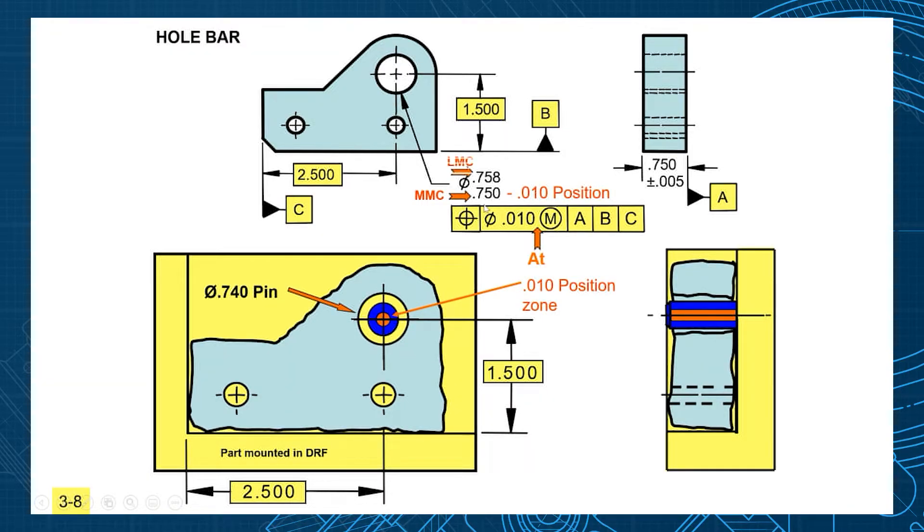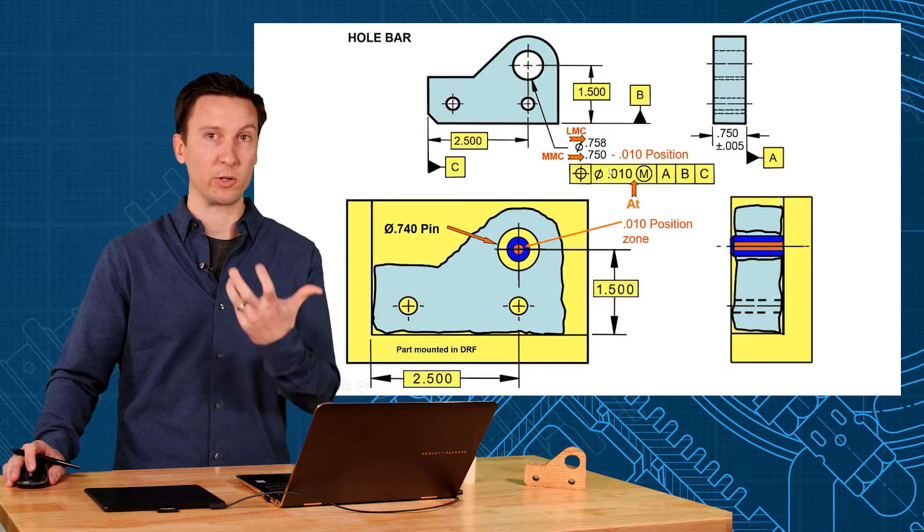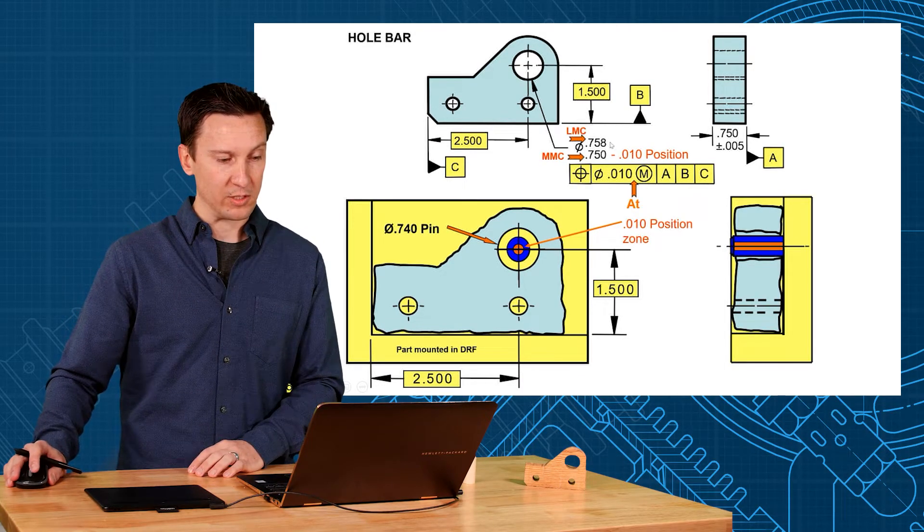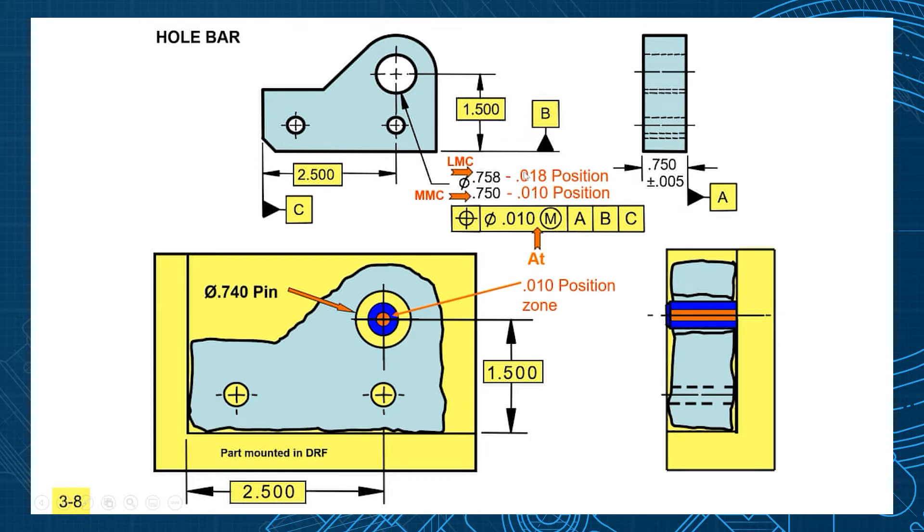But what happens if the hole comes in bigger? So the hole goes up to 758. Watch the hole. You got bigger - what happens? The position tolerance - you get a bonus, you get an extra. So the hole went from 750 to 758, so now you're allowed eighteen thousandths position. That larger hole, since it got bigger by eight, now you're allowed an extra position of eight, eighteen. Watch the tolerance zone - see that cylindrical zone now went up to a diameter of eighteen. Now the axis can shift all the way to the edge of that tolerance zone, nine thousandths off center to the right, to the left, up or down, or in the corner.